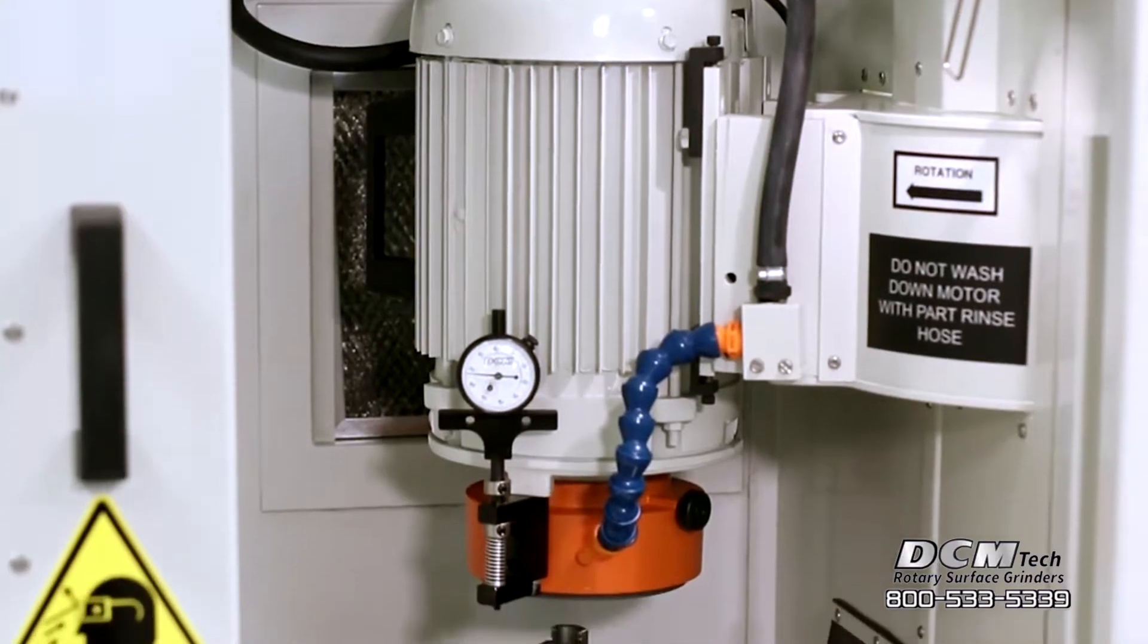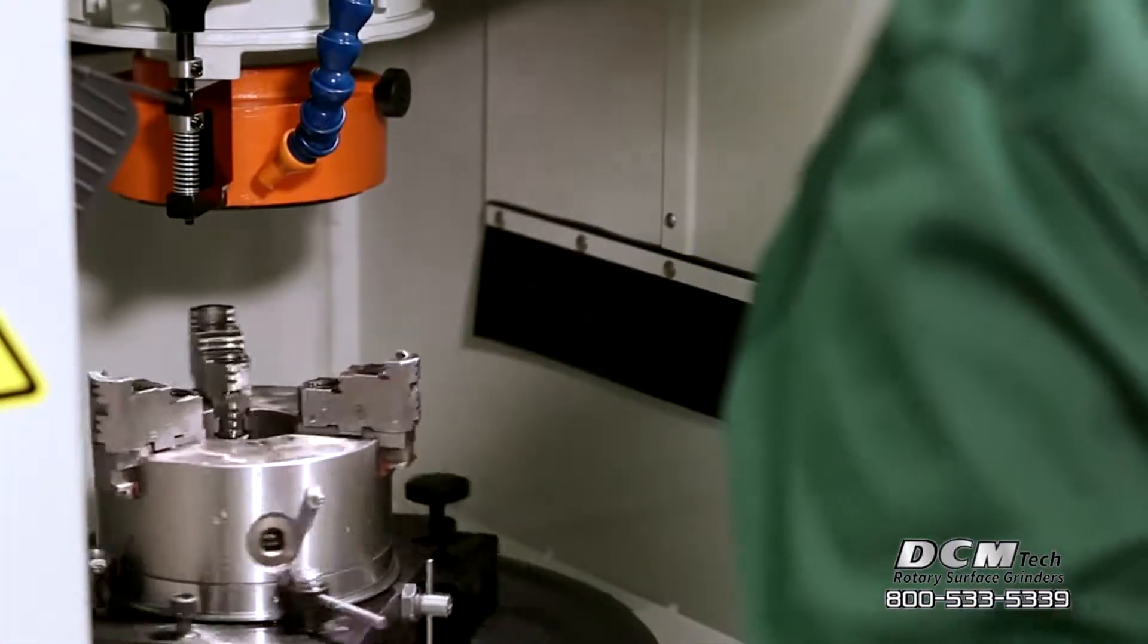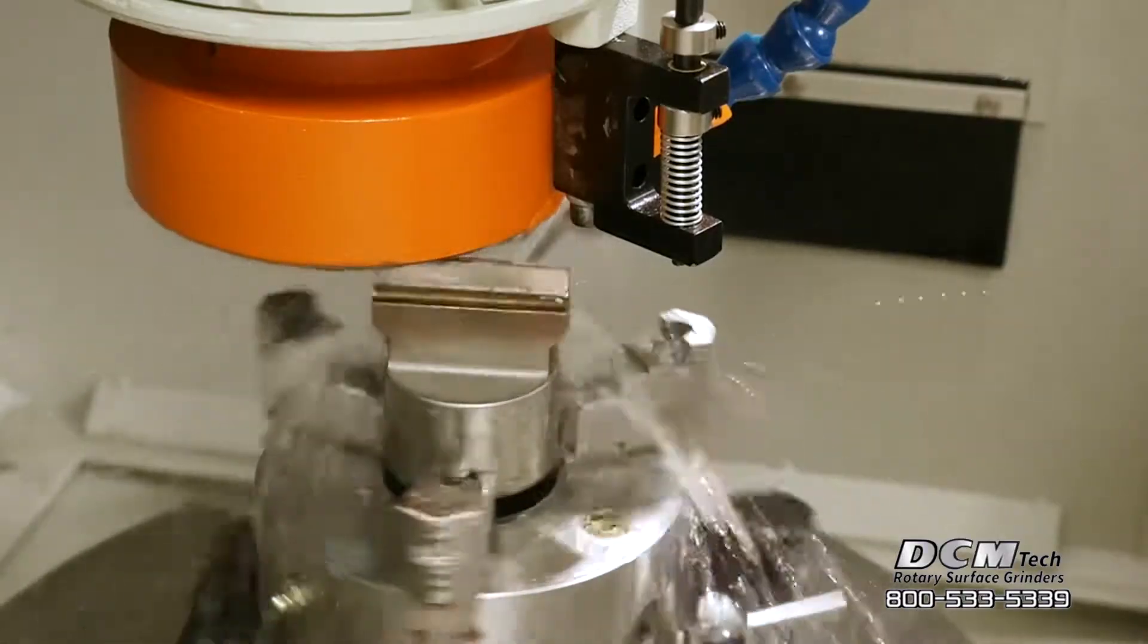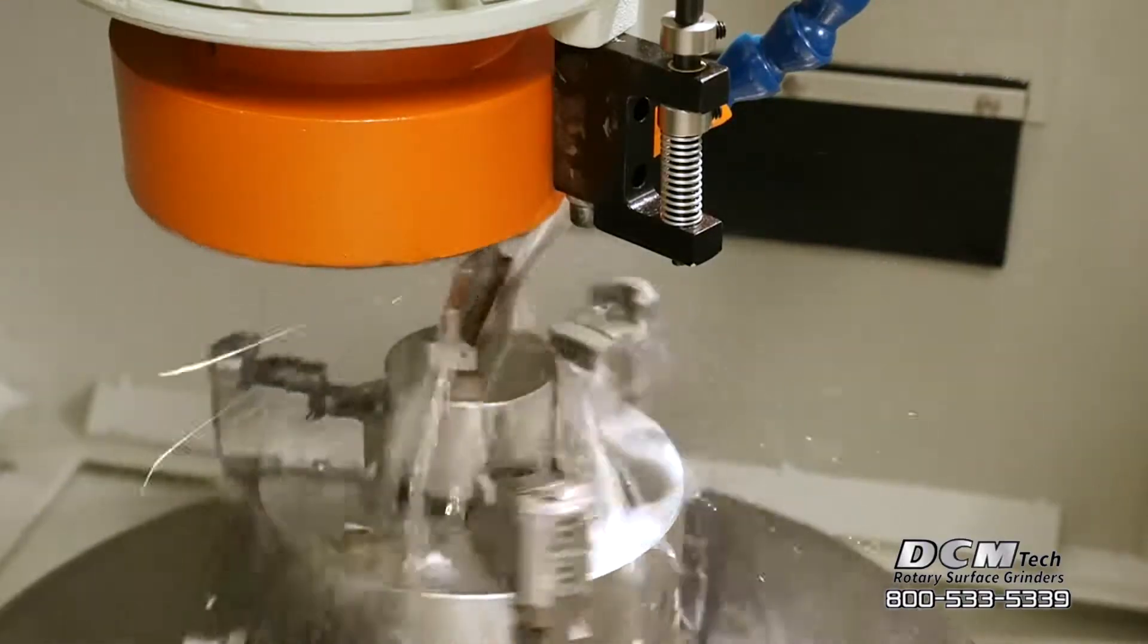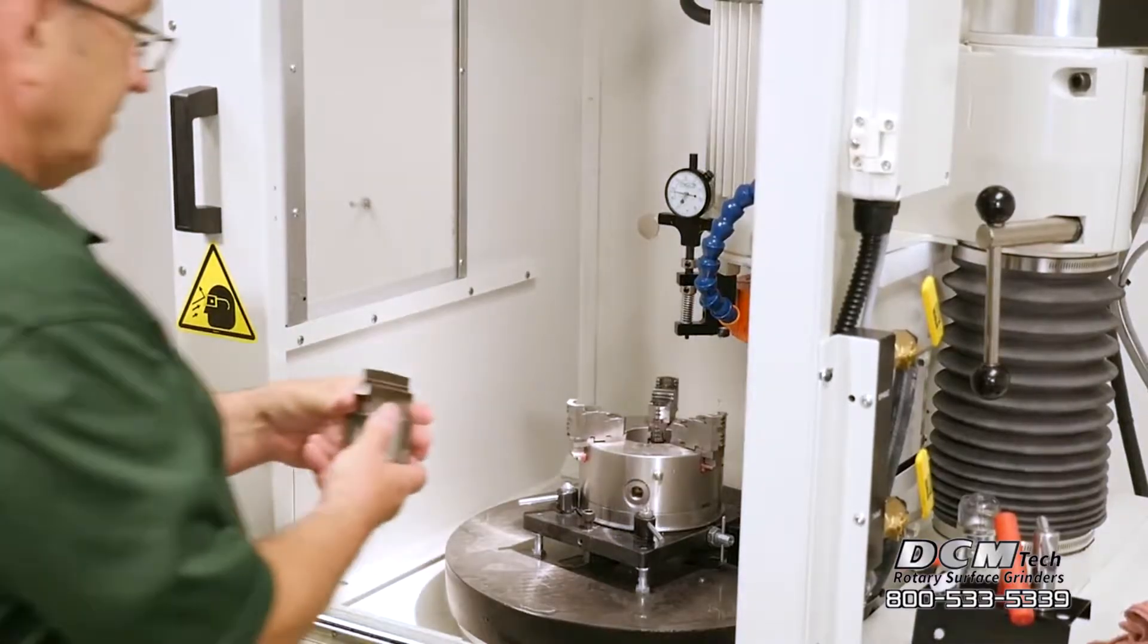Standard machine features include a durable cast iron structure, a universal style fixturing system with three jaw chuck that includes a zero to ten degree tilt sine plate for angle grinding, through spindle coolant for rapid cool grinding, and an optional quick mount magnetic chuck.